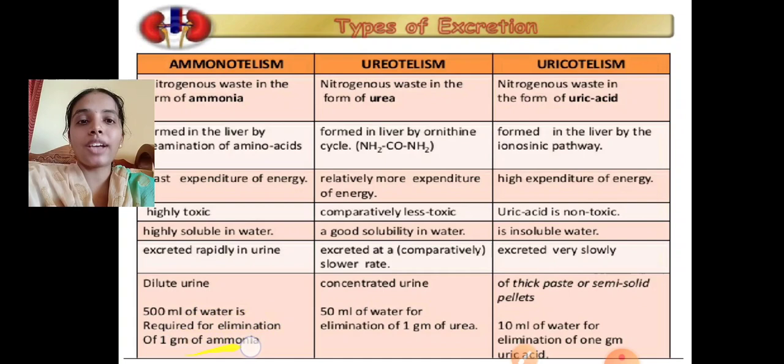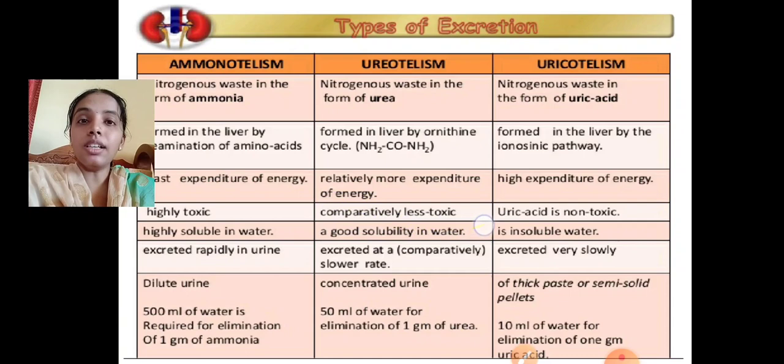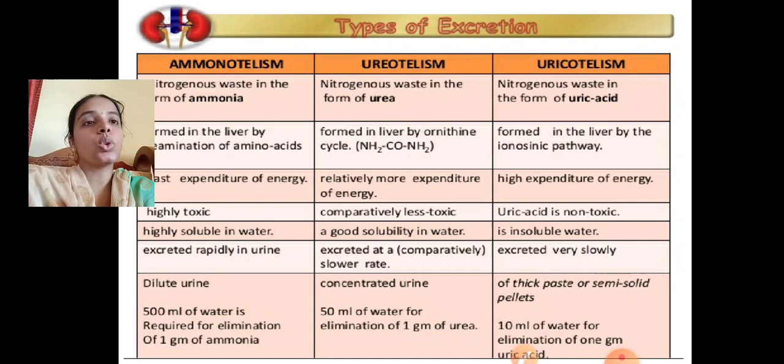500 ml of water is required for the elimination of 1 gram of ammonia. In ureotelism, organisms eliminate nitrogenous waste in the form of urea. Urea is formed in the liver by the ornithine cycle. It requires relatively more expenditure of energy and is comparatively less toxic. It has good solubility in water and is excreted at a slower rate. 50 ml of water is required for the elimination of 1 gram of urea.